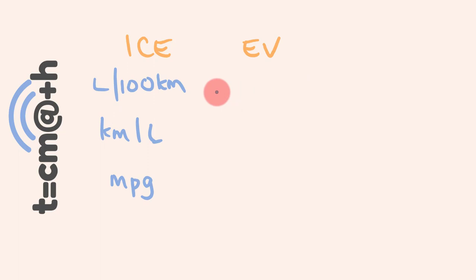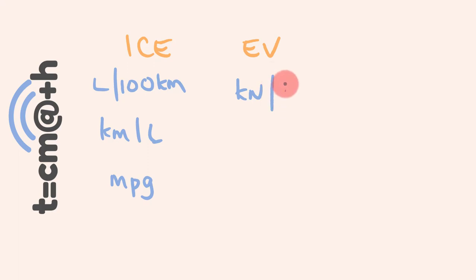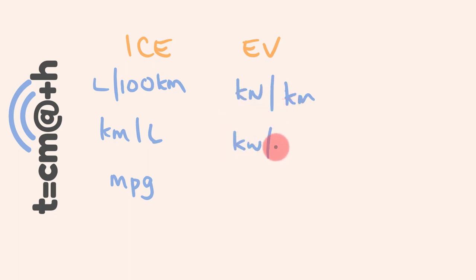For electric vehicles, it's a little bit different. We're not using petrol. These are given slightly differently — quite often in terms of kilowatts or watts per kilometre. For example, a Tesla gets 0.15 kilowatts per kilometre, or it might even be kilowatts or watts per mile. So we're looking at how much electricity is used for a given distance.